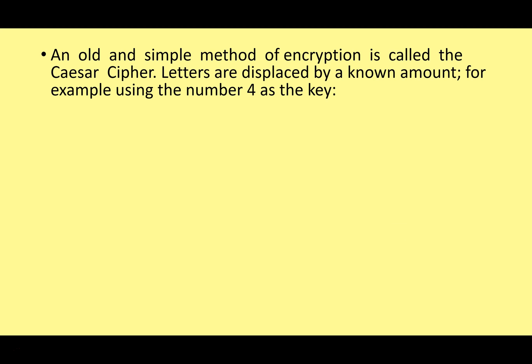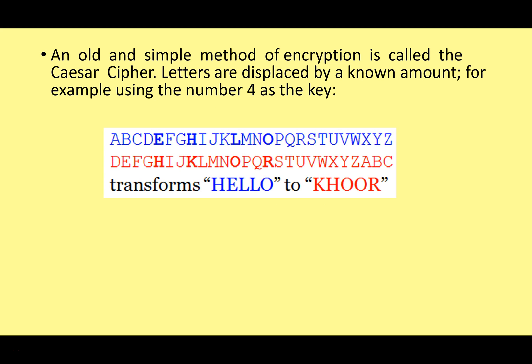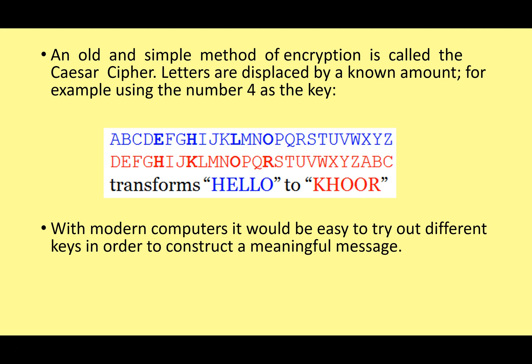This transformation normally involves a data item called a key. An older example of secret transmission is the Caesar cipher, dating back to ancient Rome. Letters are displaced by a known amount — for example, using 4 as the key, A becomes D, B becomes E, C becomes F, and so on. So the word 'hello' would transform to 'lipps'. If you know the key you can transform it back easily.